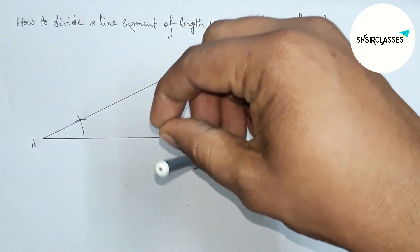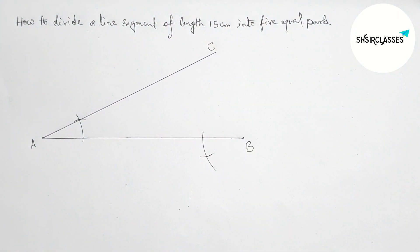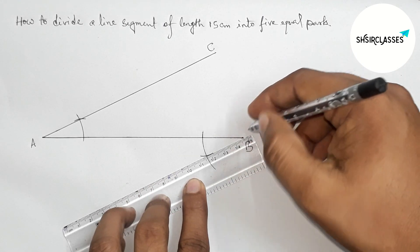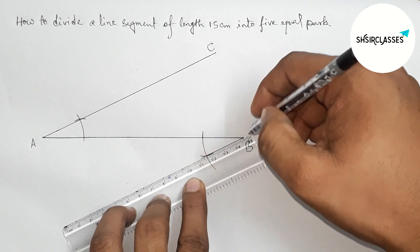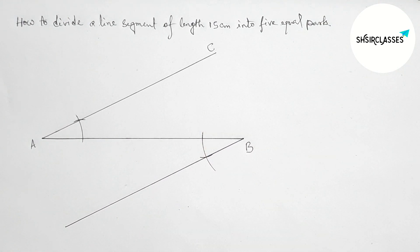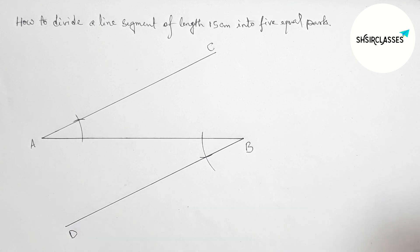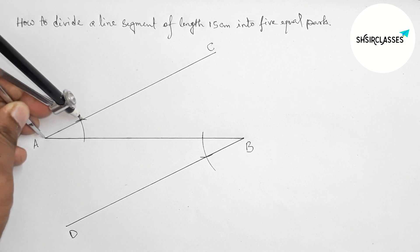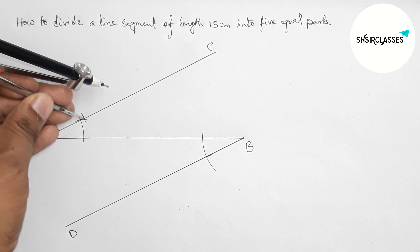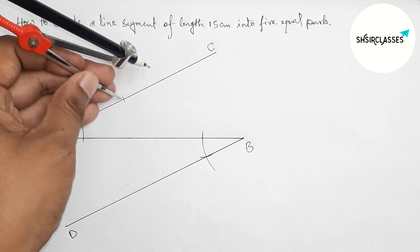Now join this line which is parallel with line AC. Join this line and mark point D. Next, divide line AC into four equal parts. Take any length and create four equal parts this way.